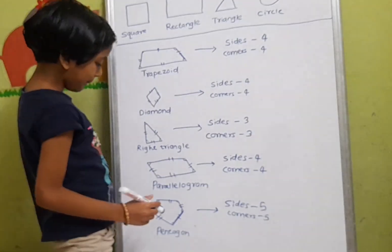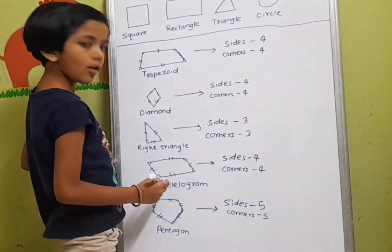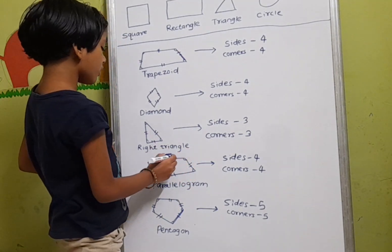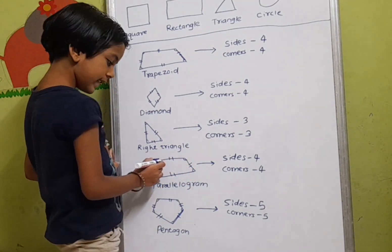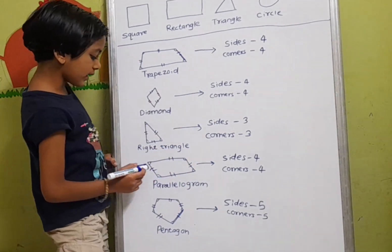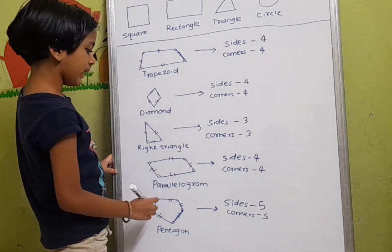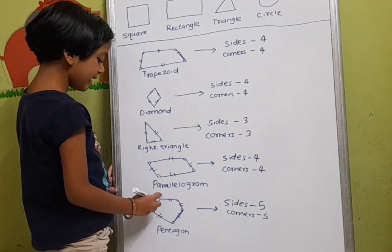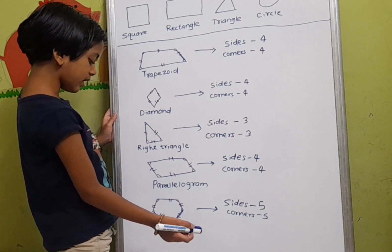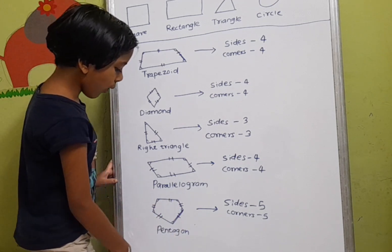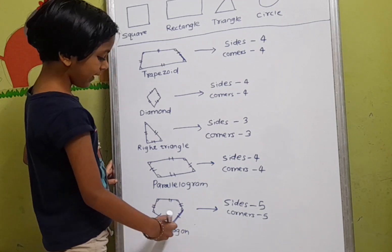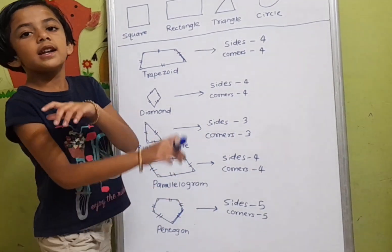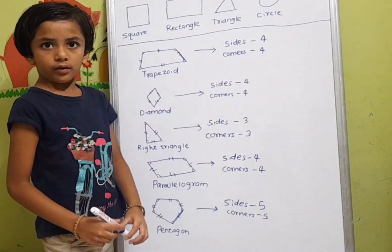Parallelogram — a parallelogram has four sides and four corners. Pentagon — a pentagon has five sides and five corners. Oval — an oval has zero sides and zero corners.